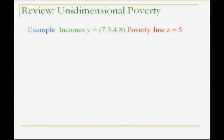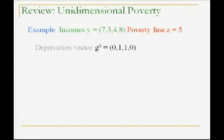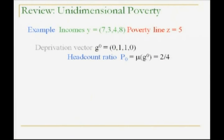Okay, unidimensional poverty — example. We have a distribution: 7, 3, 4, 8 — let's call it an income distribution. Poverty line Z equals 5. So what is poverty? The deprivation vector is given by G0. What is a deprivation vector? It's simply telling us whether you're poor or not according to the criterion: zero if you're not poor, one if you're poor. The two middle people are poor. The headcount ratio is the mean of this vector. Two people poor out of four overall — two out of four is a half. So the headcount ratio is the mean of this interesting vector, which I will generalize to a matrix in just a second.